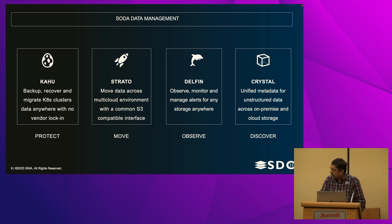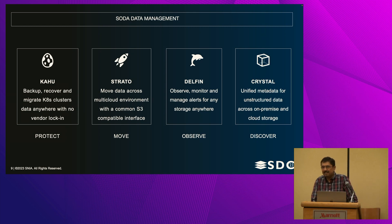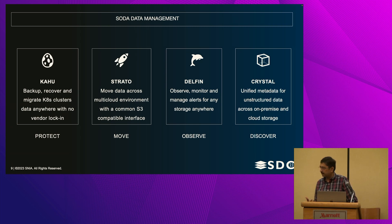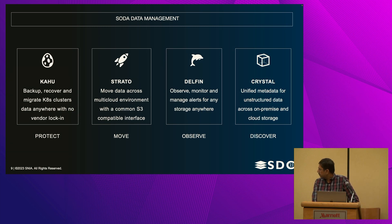The fourth project, which is very new, is Crystal. When we started Strato — about moving data from different object stores — we realized that the problem before moving is actually finding what is where. Crystal is a platform where you can get information about what kind of data you have in different places across different cloud storage. We'll talk about Kahoo and Crystal more later.